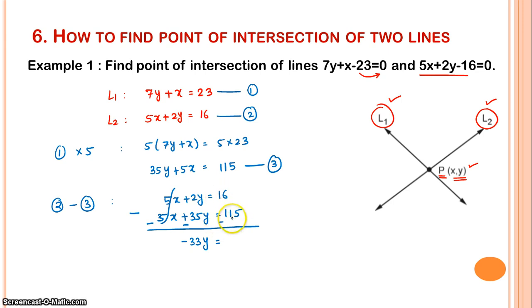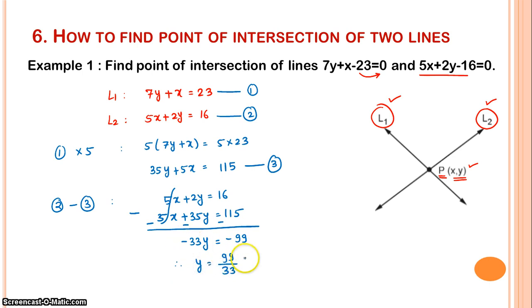So minus 33y equals 16 minus 115, which equals minus 99. Therefore y equals 99 divided by 33, which simplifies to y equals 3.